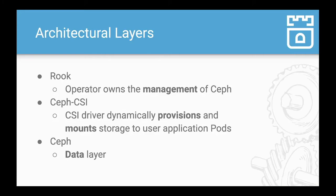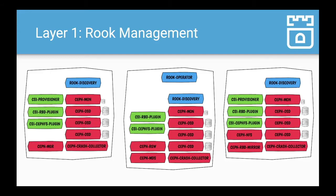Let's talk about the architectural layers of Rook with Ceph, starting with the Rook operator itself, which owns the management of Ceph. There's also Ceph CSI, the CSI driver that dynamically provisions and mounts storage to user applications. Ceph itself is the data layer, which Rook encapsulates and manages. The Ceph OSDs — object storage daemons — connect to underlying storage, aggregate it, pool it together in a software-defined cluster, and then expose that to the user.